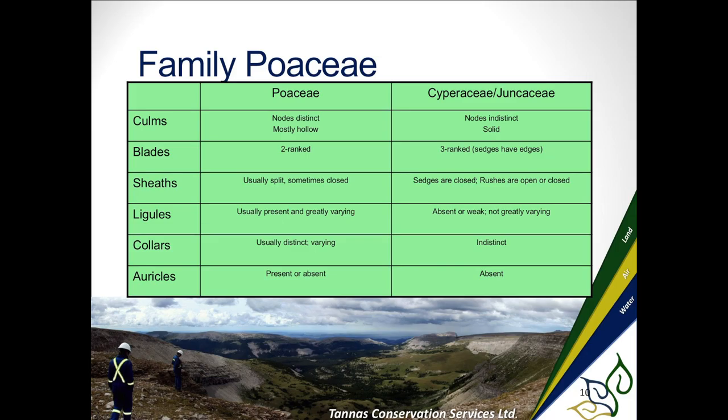For sheaths, you'll have them split or closed. When you have a closed sheath in a grass, you've eliminated almost everything — you're almost down to a brome. There are only a few species with closed sheaths. A closed sheath means it actually merges together, not just overlapping. Many open ones are overlapping, and a lot of people mistake an overlapping sheath for a closed one.